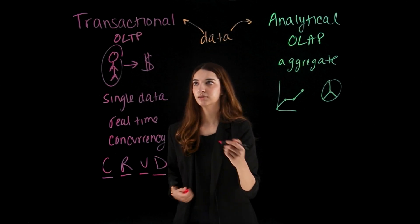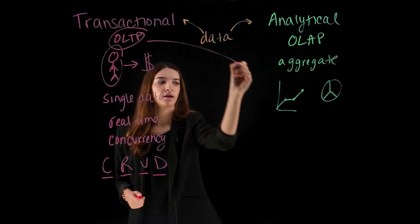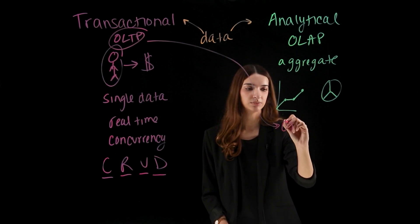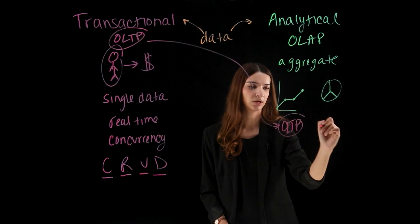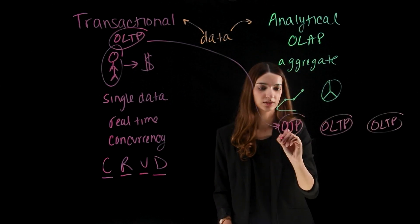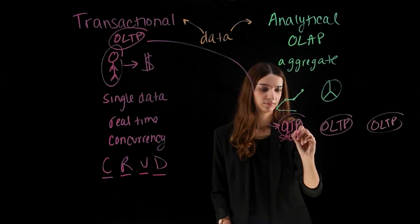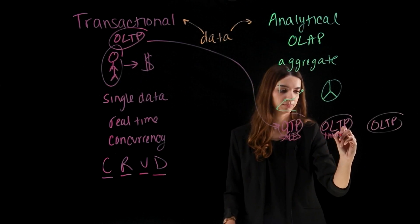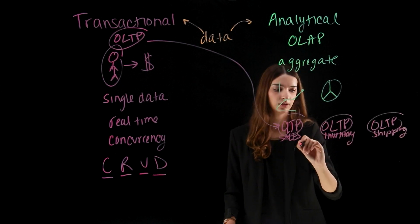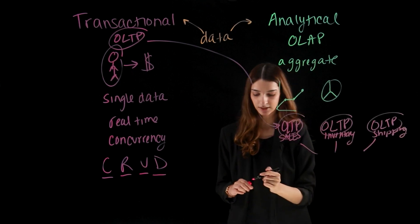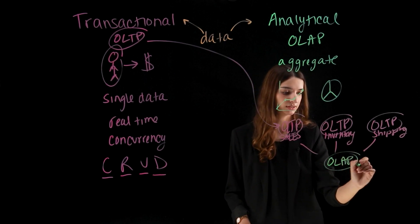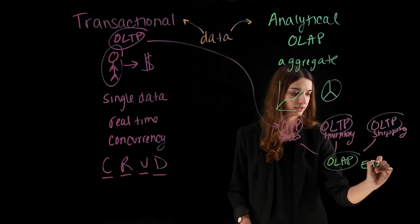We can take the information that is in our OLTP database and bring that down to our OLAP data store. We normally have multiple OLTP databases in one company — we might have a database for sales, one for inventory, and another one for shipping. All this information is aggregated together for our OLAP data store, which is normally an enterprise data warehouse.